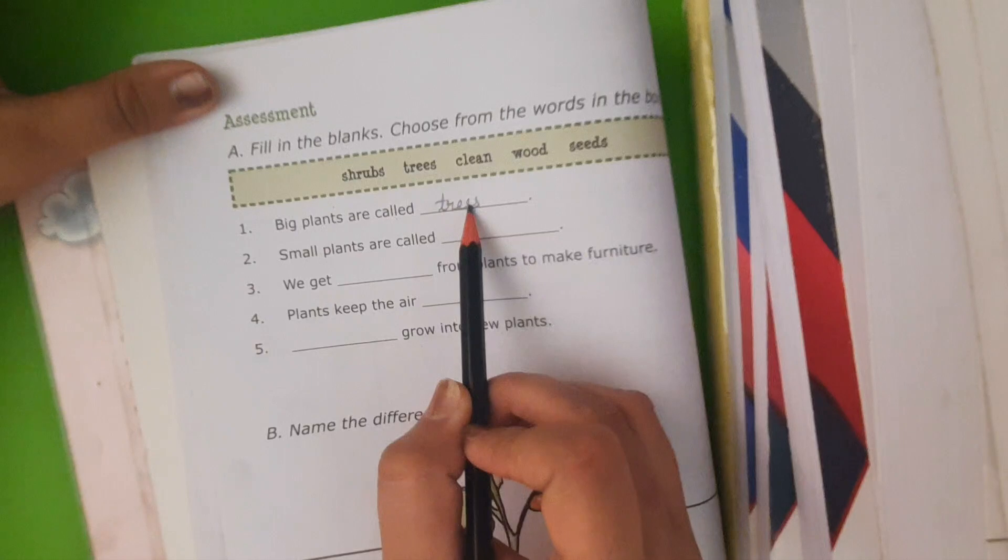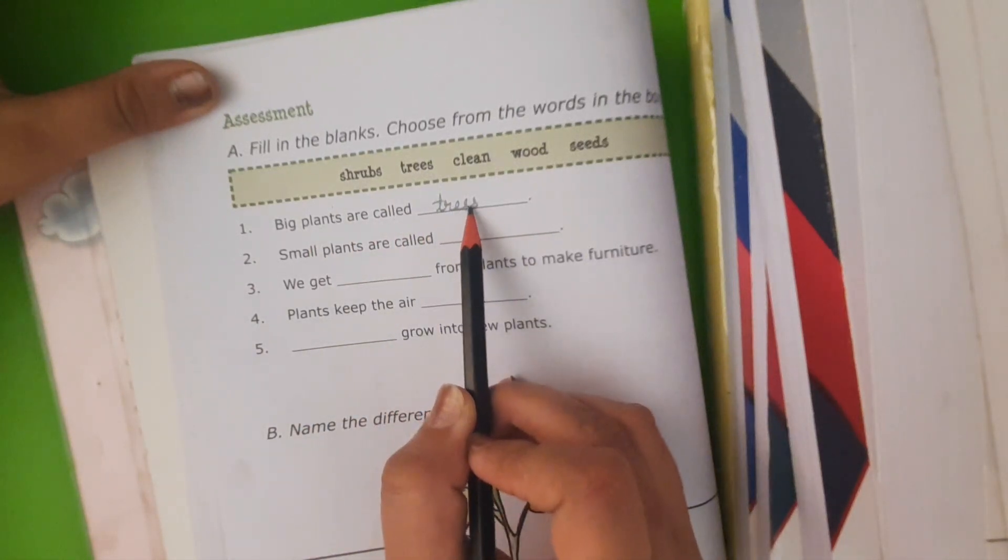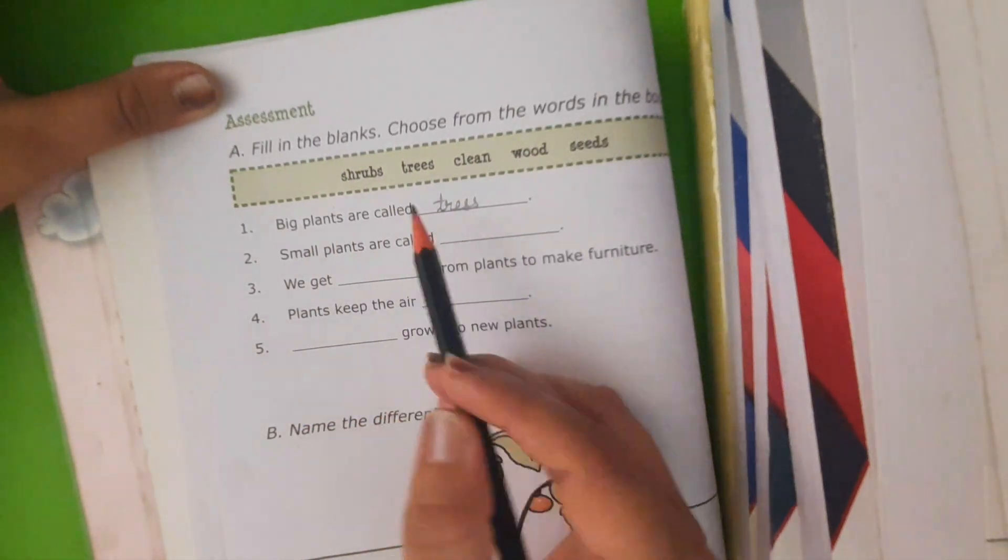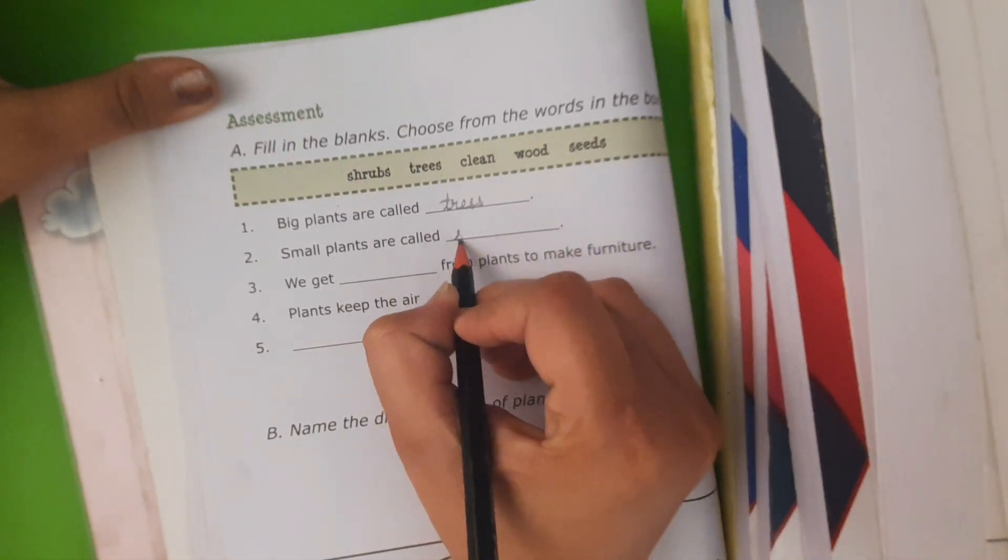First is big plants are called trees. Small plants are called shrubs.